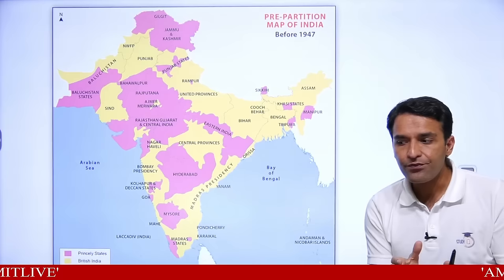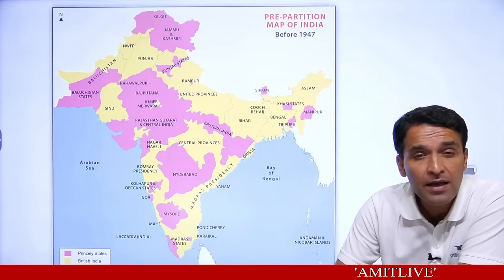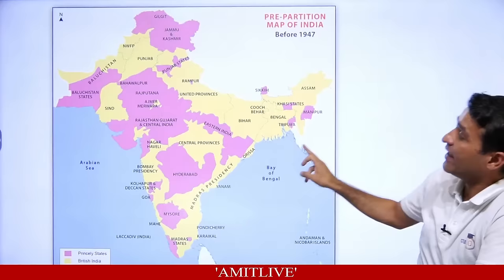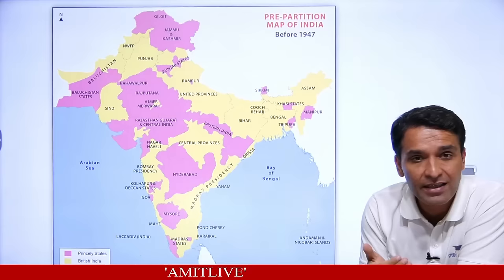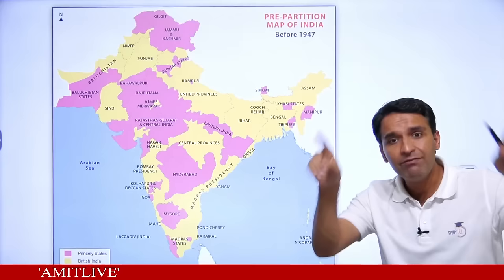When the Constituent Assembly was to be formed, both types of areas needed representation. From the yellow areas — British India directly ruled provinces — 296 people would be elected. From the pink areas — princely states — 93 people would be nominated by their kings or princes. From the whole country, 389 people would be chosen to form the Constituent Assembly, which would make the constitution for the entire country. That was the Cabinet Mission plan.